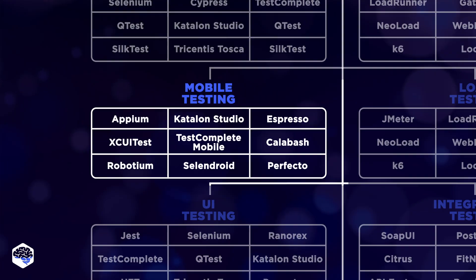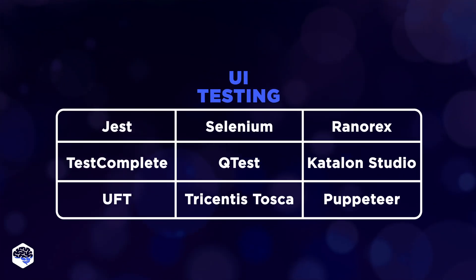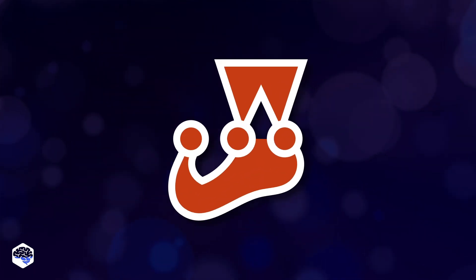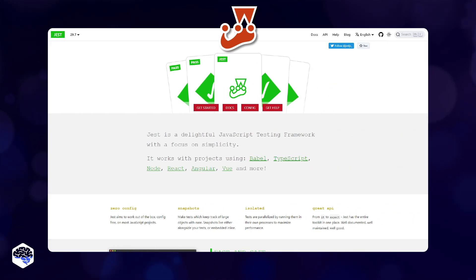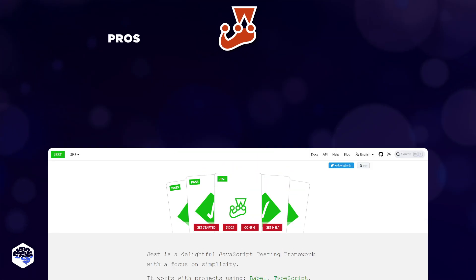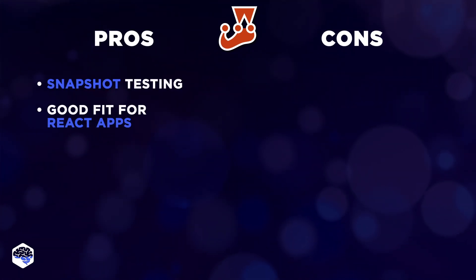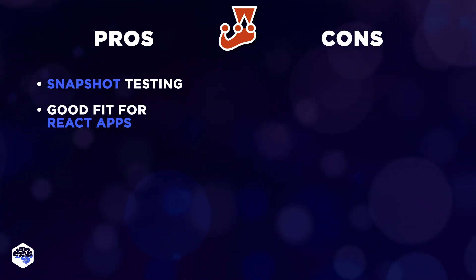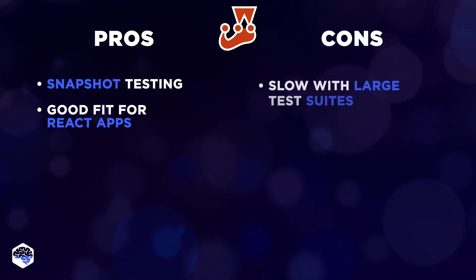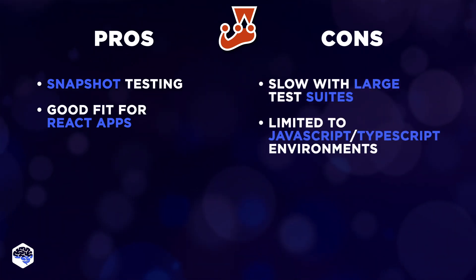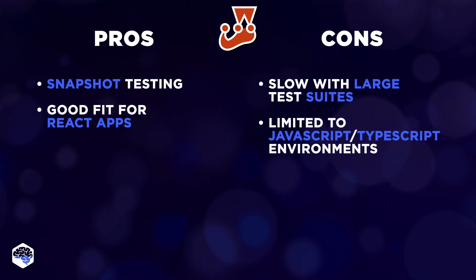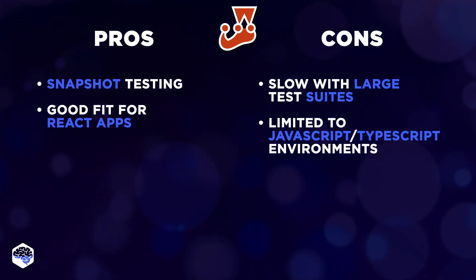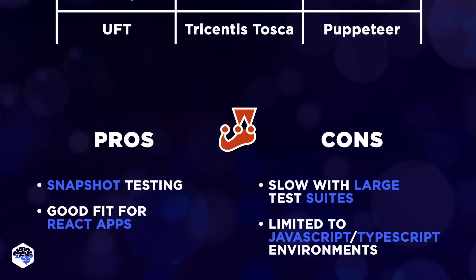Let's move on to user interface testing. For this purpose, the Jelvix QA team recommends Jest. Jest is known for its snapshot testing, which ensures UI consistency, and it integrates exceptionally well with React applications. However, Jelvix teammates report that Jest might be occasionally quite slow with large test suites and is limited to JavaScript and TypeScript environments. If this doesn't fit you, you can use other tools like Selenium, Ranorex, TestComplete, or others.